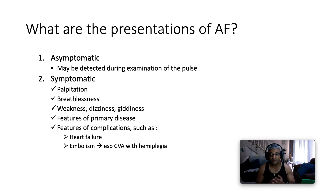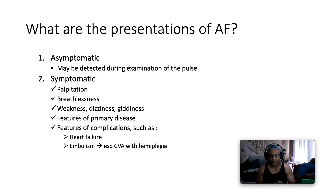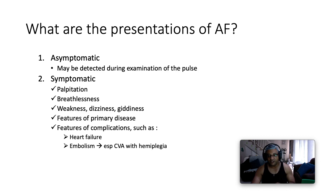Or they may present with features of the primary disease. For instance, if they have thyrotoxicosis, they complain of heat intolerance, appetite change, weight loss despite increased appetite, change in bowel habit, change in menses, and so forth. Or they may complain of features of complications, such as heart failure or embolism, especially a cerebrovascular accident with hemiplegia, in which case the predominant presentation will be weakness.